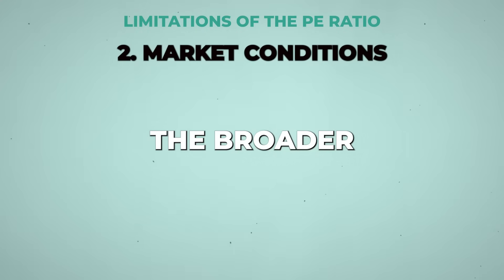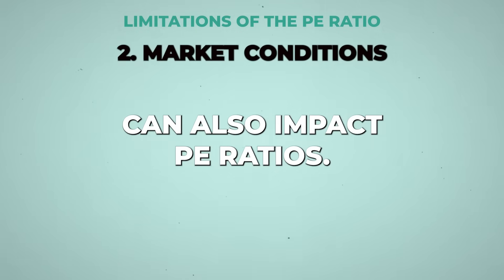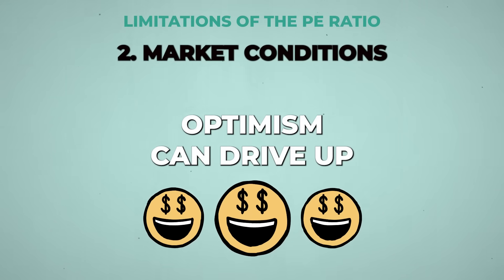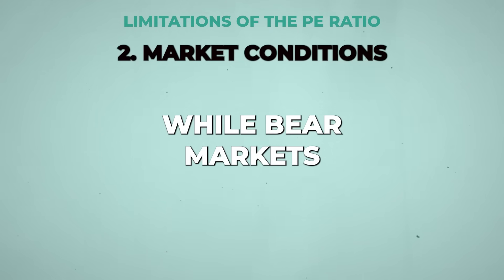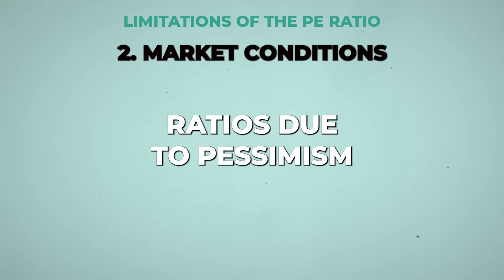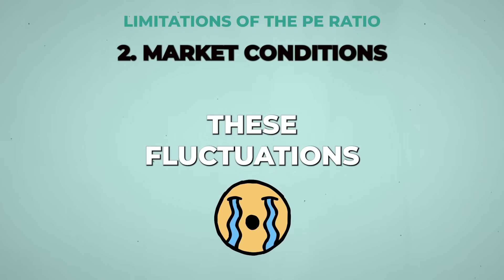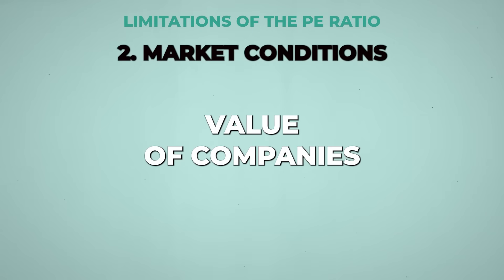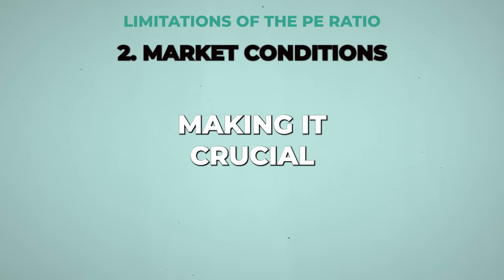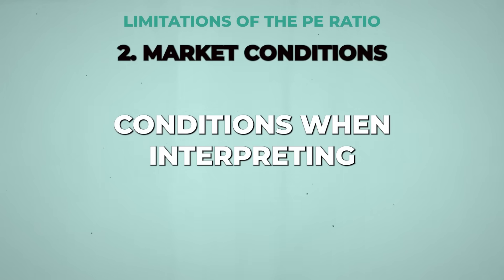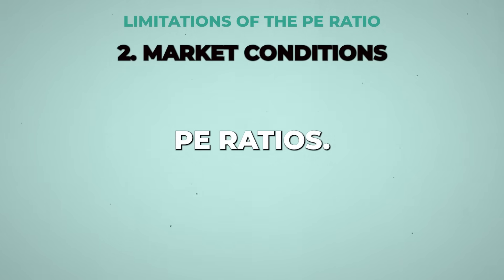Market conditions: the broader market environment can also impact P-E ratios. During bull markets, increased investor optimism can drive up P-E ratios, while bear markets might lead to lower P-E ratios due to pessimism and risk aversion. These fluctuations may not always reflect the fundamental value of companies, making it crucial to consider market trends and economic conditions when interpreting P-E ratios.